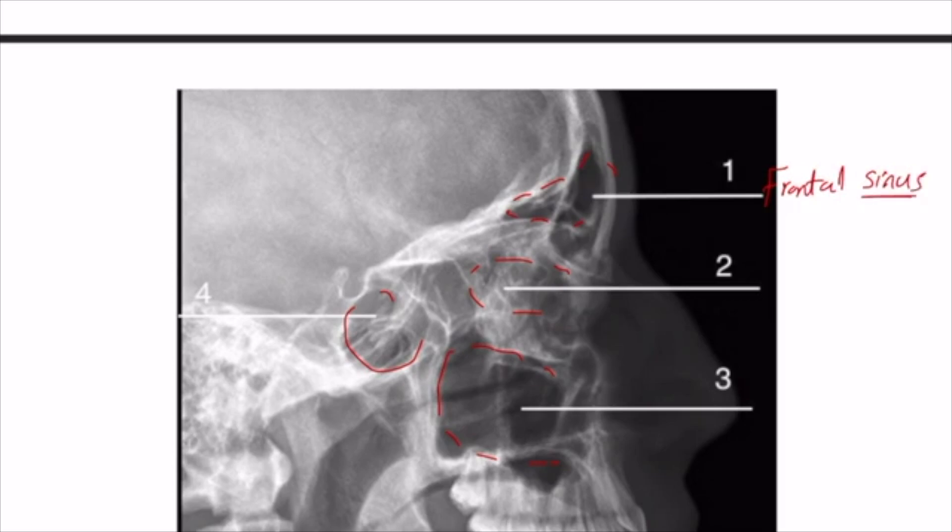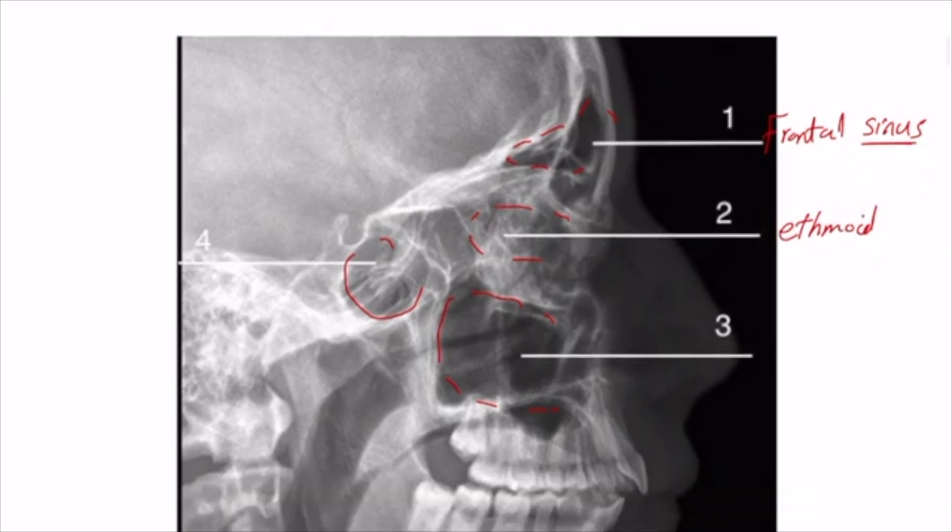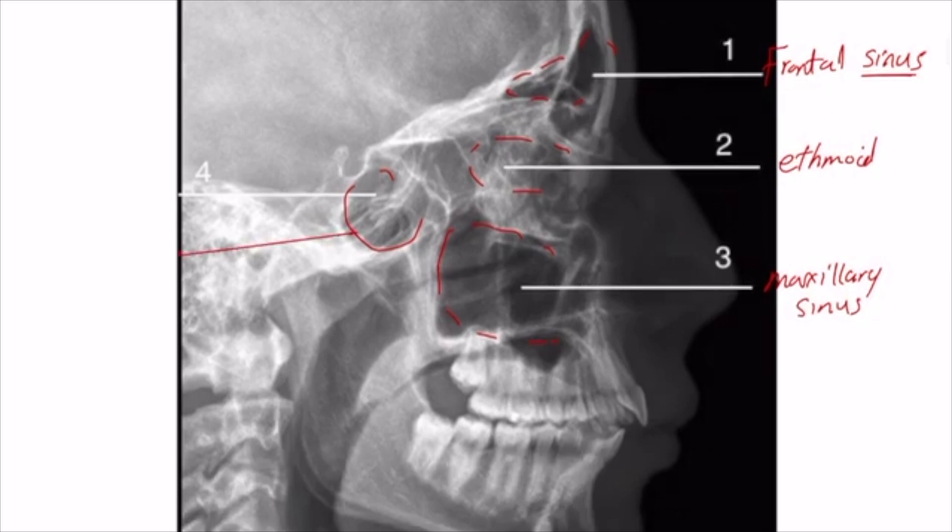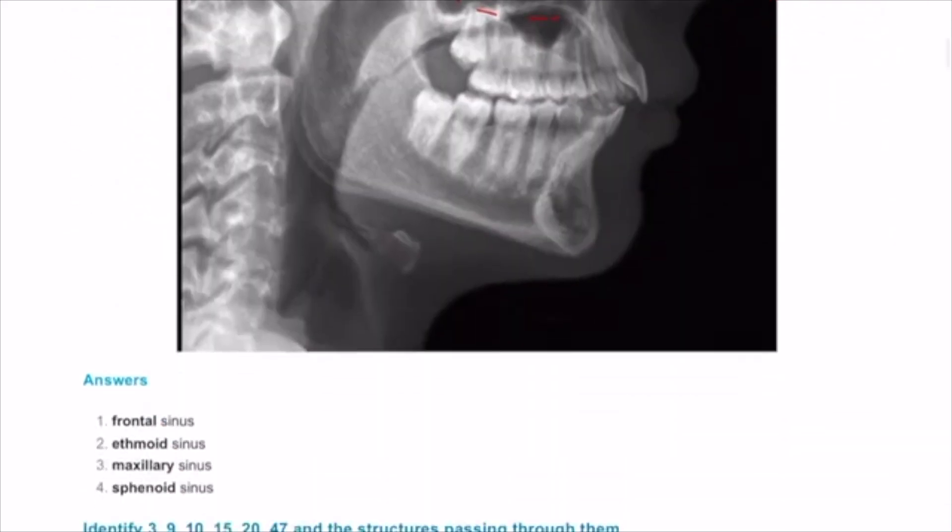And here this is the ethmoid bone, so this is the ethmoid sinus, and this is the maxillary bone, so that will be the maxillary sinus. And this one, that will be the sphenoid sinus on the other side. So you have multiple structures and all of them are sinuses because they are cavities containing air: maxillary, ethmoid, frontal sinus, and sphenoid sinus.